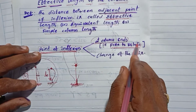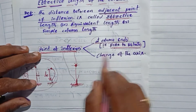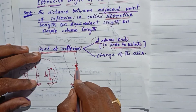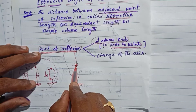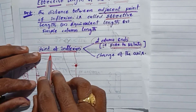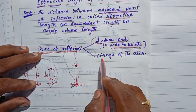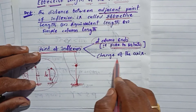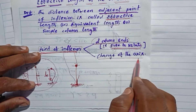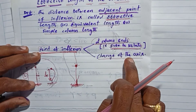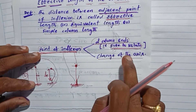Where the column is free to rotate, that is a point of inflection. The point of inflection is the point where the axis changes direction — the change of the axis.